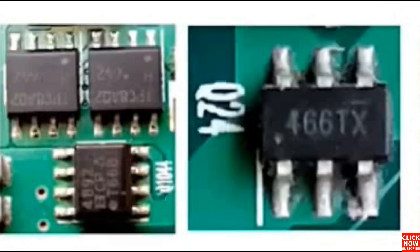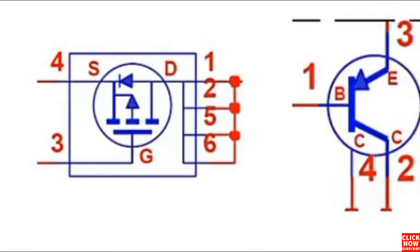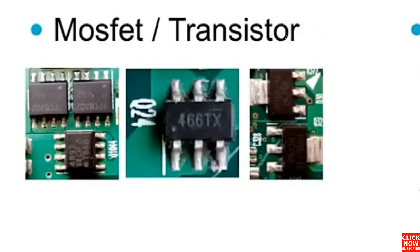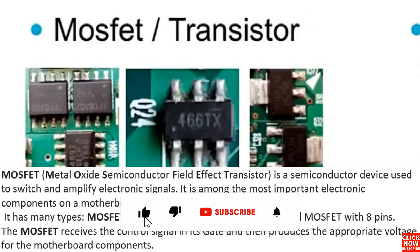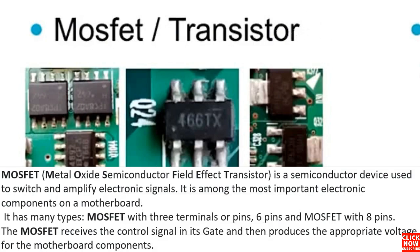We're going to cover many types of transistors and MOSFETs, including the 8-pin MOSFETs, the 3-pin MOSFETs, and the 6-pin MOSFETs. As a definition, the MOSFET — or Metal Oxide Semiconductor Field Effect Transistor — is a semiconductor device used for switching and amplifying electronic signals. It has many types: MOSFETs with 3 pins, 6 pins, and 8 pins.